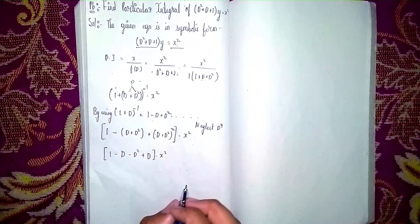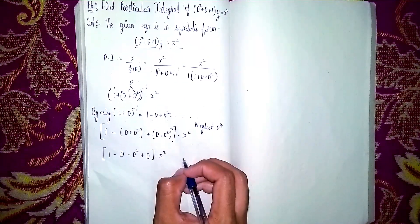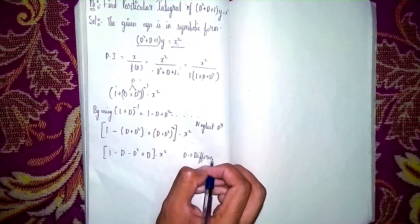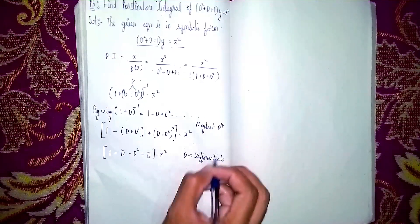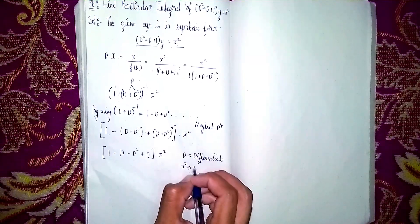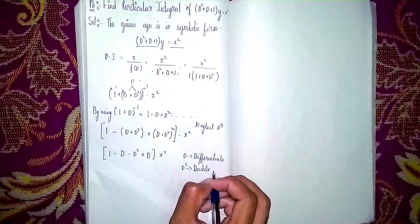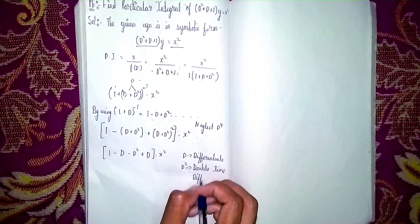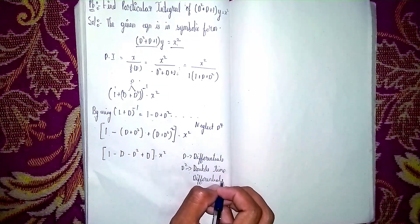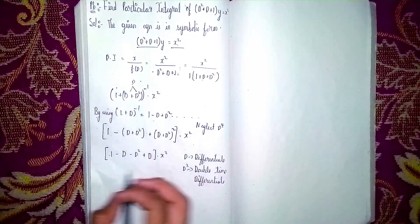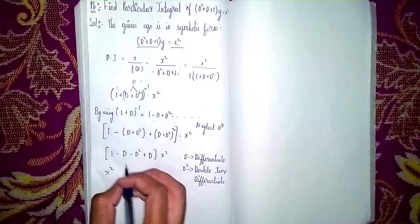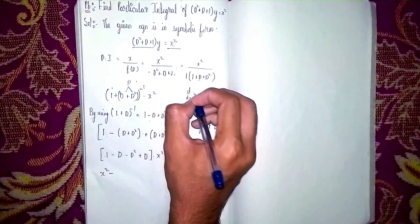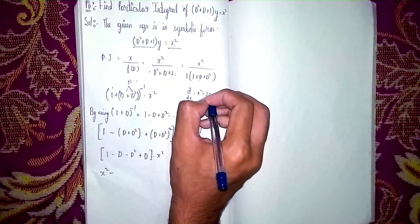Remember: D means differentiate once, and D² means differentiate twice. Now multiply: 1 into x² gives x². Then minus D of x², which means d/dx of x² = 2x. So we get x² minus 2x.